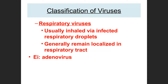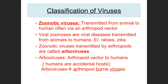A zoonotic virus is caught from other animals, typically arthropods — animals with an exoskeleton such as insects, spiders, or ticks. Zoonotic viruses transmitted via arthropods are called arboviruses (arthropod-borne viruses). Examples include the Zika virus and West Nile virus. Rabies is transmitted via mammals, not arthropods, so it is not an arbovirus. Yellow fever virus, however, is definitely an arbovirus.